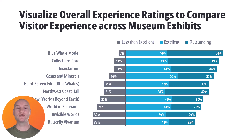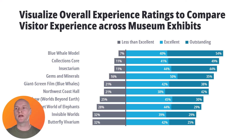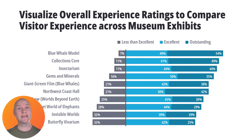One way that I love using them is to compare experiences across exhibits within a single museum. Right here I just have fictitious data from one of my very favorite museums in the world — the American Museum of Natural History in New York. I took some of their exhibit names from their website. This technique is called the diverging stacked bar chart.